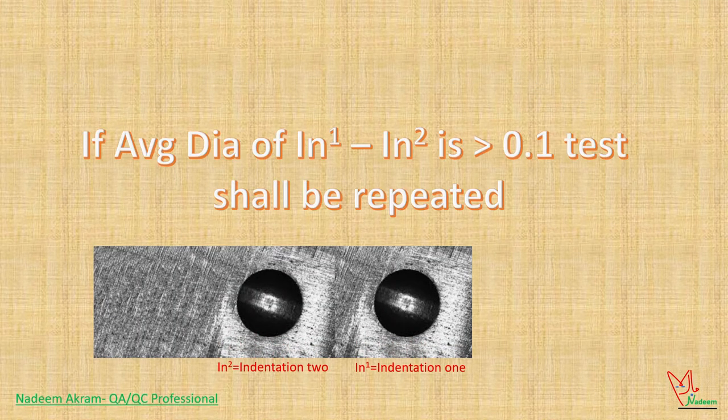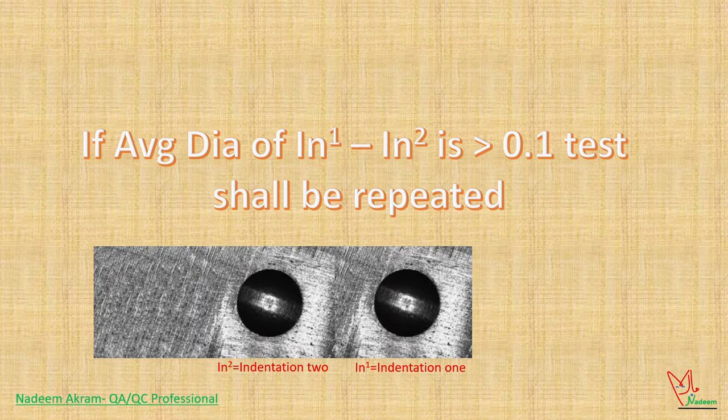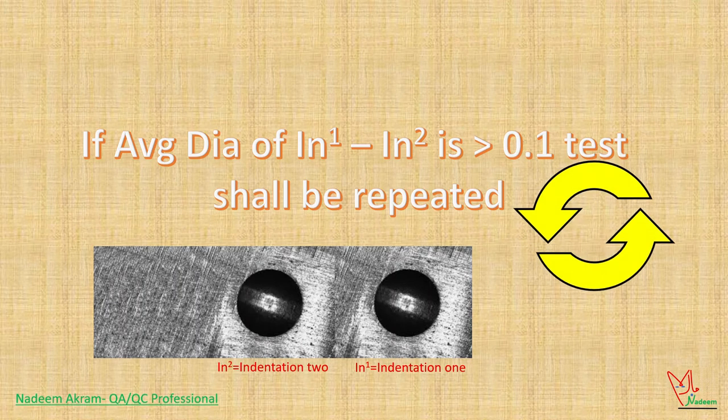If the diameters of two indentations made on test surface differ more than 0.1 millimeters, then the readings shall be discarded and the test shall be repeated.